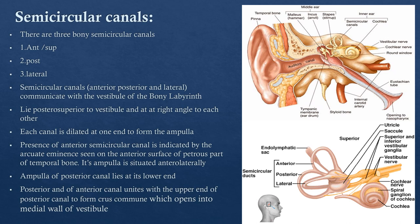The most posteriorly placed part of the bony labyrinth is the semicircular canals. There are three: the anterior (also known as superior), the posterior, and the lateral (or horizontal). They communicate and open into the vestibule and lie at right angles to each other. Each canal has one dilated end known as the ampulla. The superior (anterior) semicircular canal produces an eminence on the anterior surface of the petrous part of the temporal bone known as the arcuate eminence.